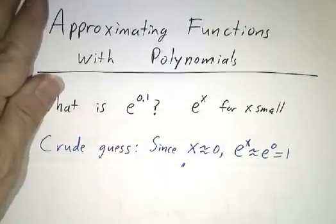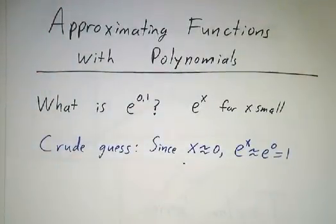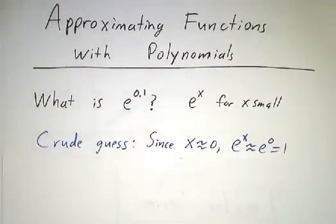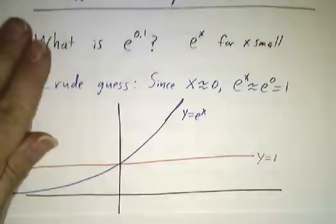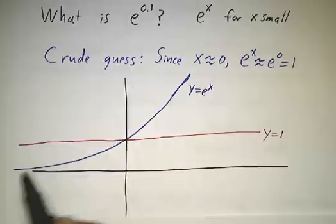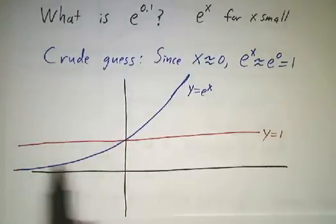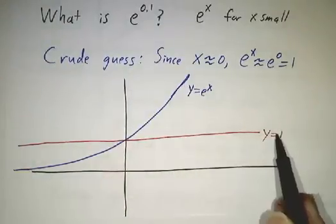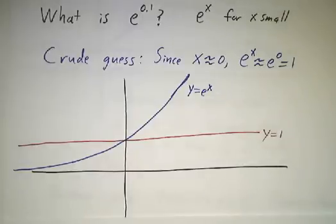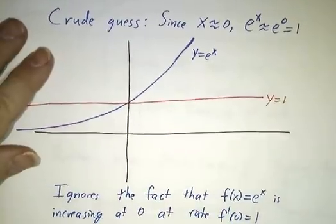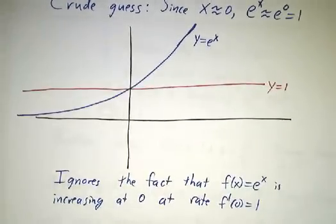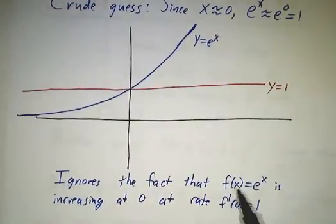And you might say, you know what? x is pretty close to zero, so e to the x should be pretty close to e to the zero. That's one. And that's the best you could do if all you knew was the value at the origin. And what you've really done is you've taken this curve, y equals e to the x, and you've approximated it with a horizontal line. Now, this is a very crude guess, and the reason is because we didn't use any information except the value at that one point. In particular, we pretended that our function was a constant. We ignored the fact that the function changes.